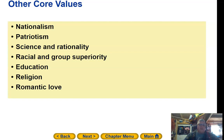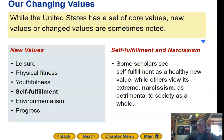Our core values in America also include nationalism, patriotism, science and rationality, racial group superiority, education, religion, and romantic love. While the United States has a set of core values, new and changing values are sometimes noted. New values include the importance of leisure, physical fitness, youthful society, self-fulfillment, environmentalism, and progress.